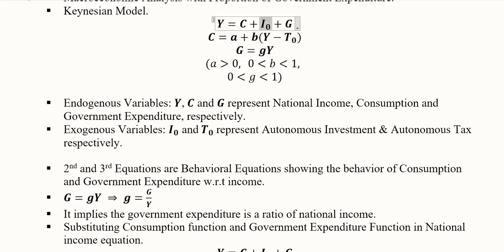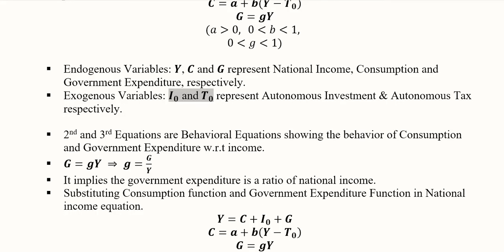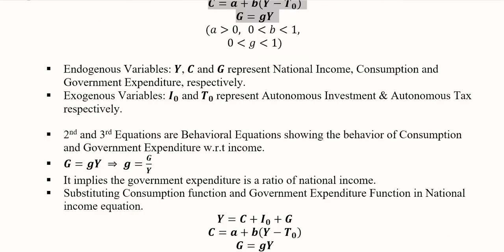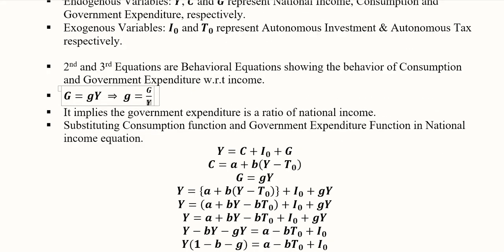Now G is included in those endogenous variables. Previously it was exogenous variable like I₀ but now it is endogenous. T₀ is also exogenous in this case. I₀ and T₀ are the exogenous or autonomous variables. These are the two behavioral equations once again. And we know that this is a kind of percentage that shows the percentage of government expenditure with respect to national income. So with the help of a ratio we can represent this.